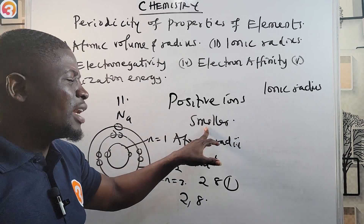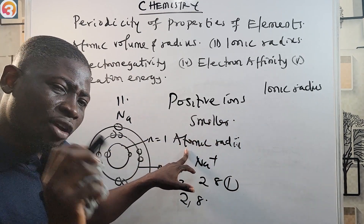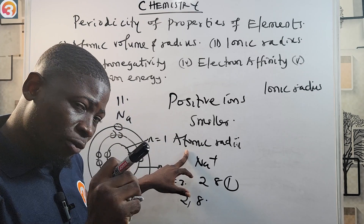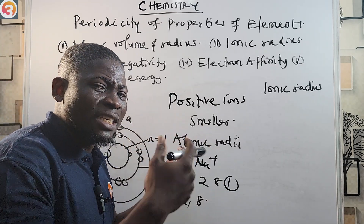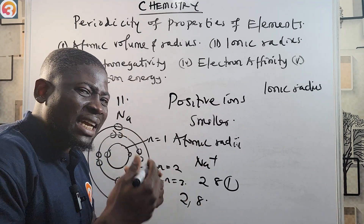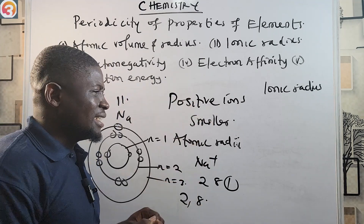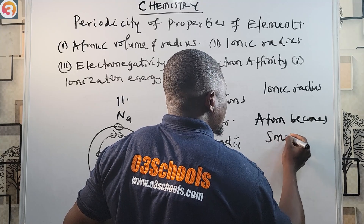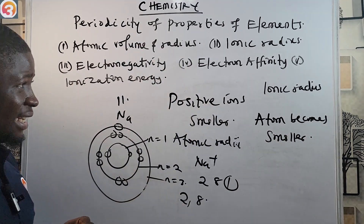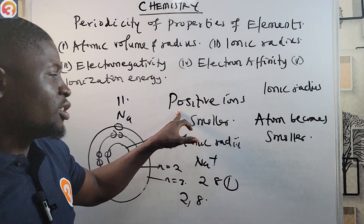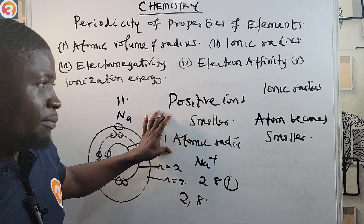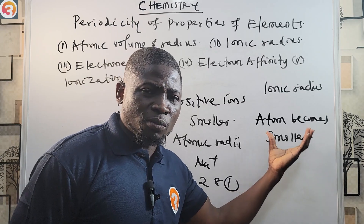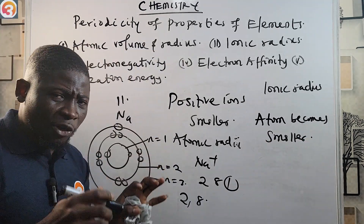That is why the ionic radius of positive ions is smaller than the corresponding atomic radius. For a positive ion to be formed, the atom must lose its outermost electron, and because it is losing that electron, the atom becomes smaller.